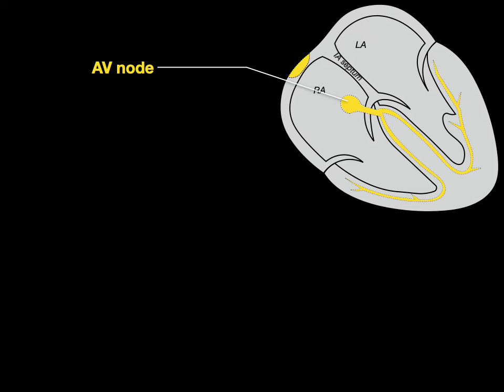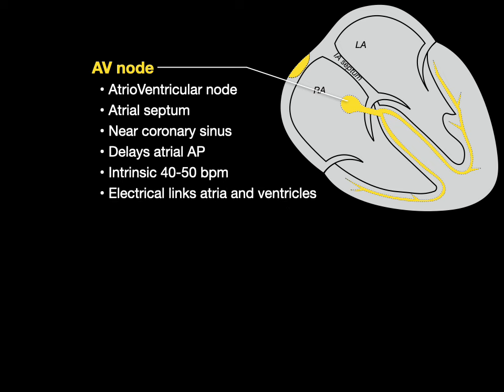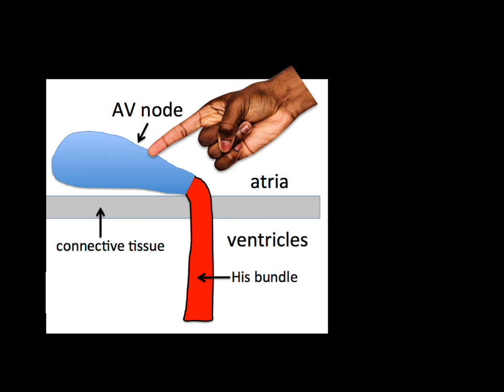Next we have the AV node, or atrioventricular node, which is located in the interatrial septum right by the opening of the coronary sinus. Its function is to delay the atrial action potential. It also has automaticity with an intrinsic rate of 40 to 50 beats per minute. The AV node is the electrical link between the atria and ventricles.